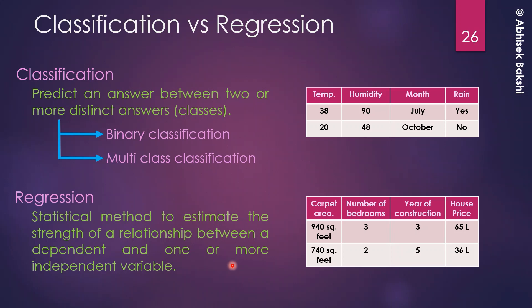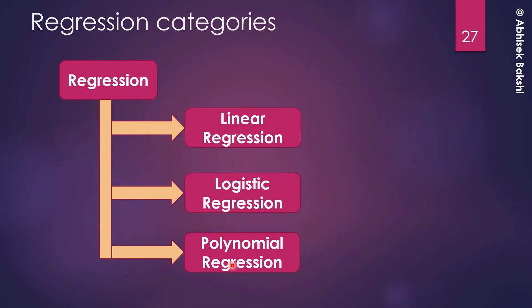There are three different types of regression: linear regression, logistic regression, and polynomial regression. Linear regression means there is a linear relationship between input and output — we can draw a straight line representing that relationship. We will learn in detail how a straight line can do that.